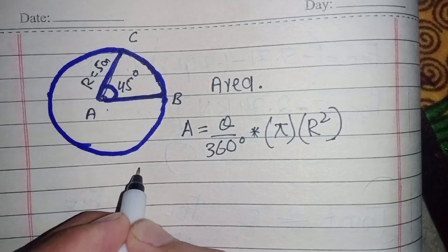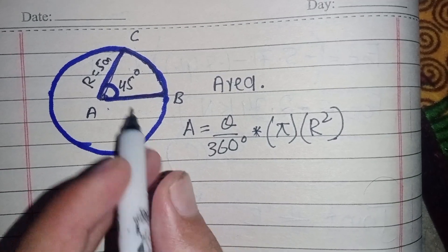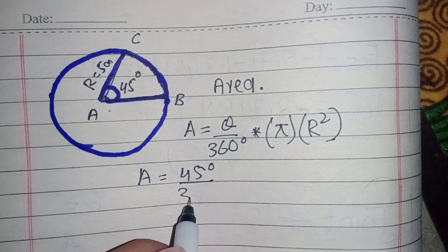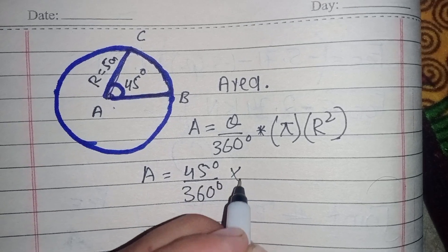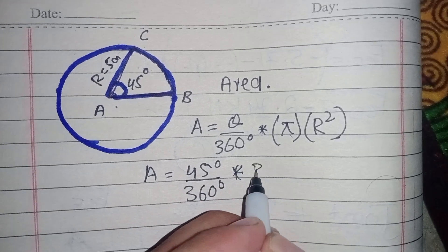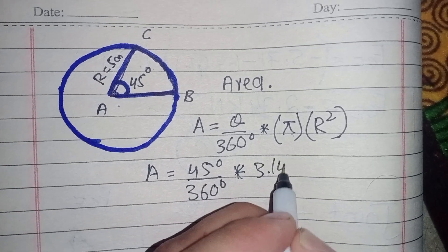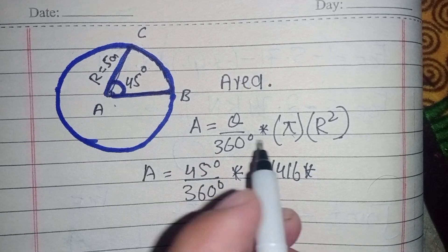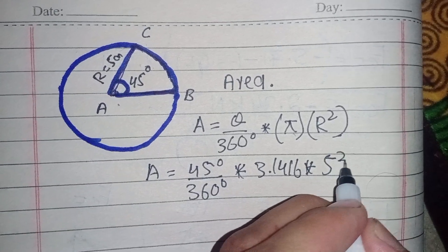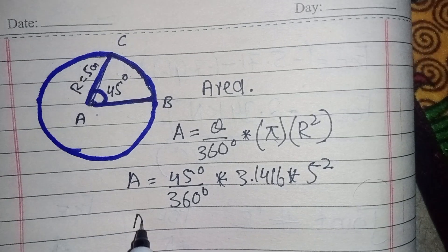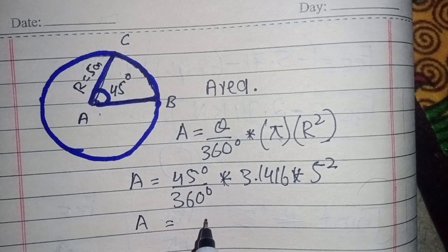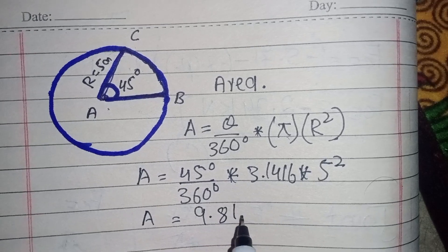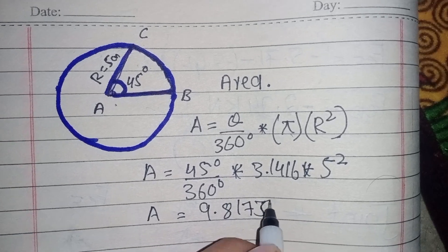Now, A equals — theta is 45 degrees — 45 degrees divided by 360 degrees, multiplied by pi, which has the value 3.1416, multiplied by r squared. r is 5 centimeters, so 5 centimeters squared. A will be equal to 9.8175 centimeters squared.